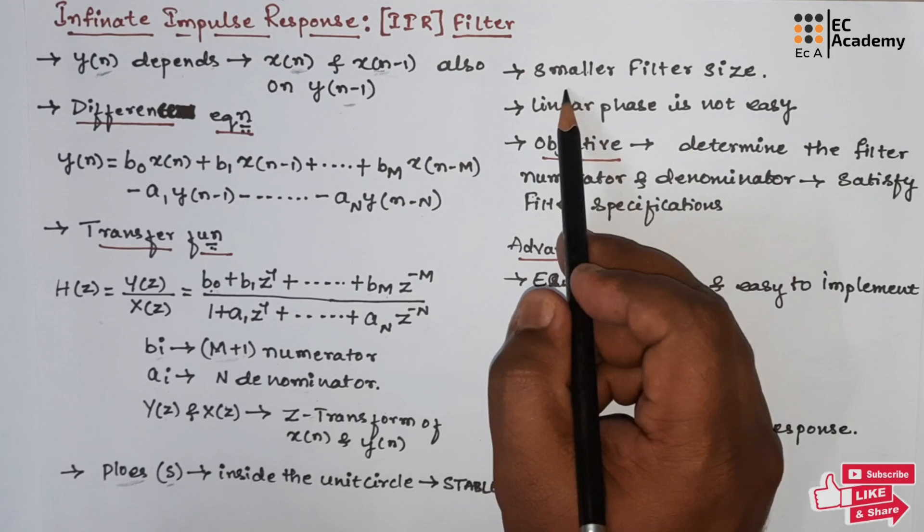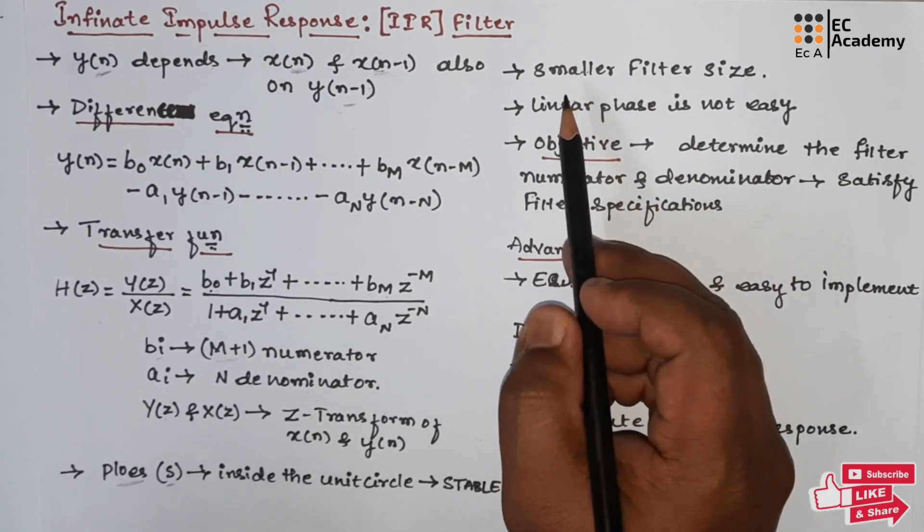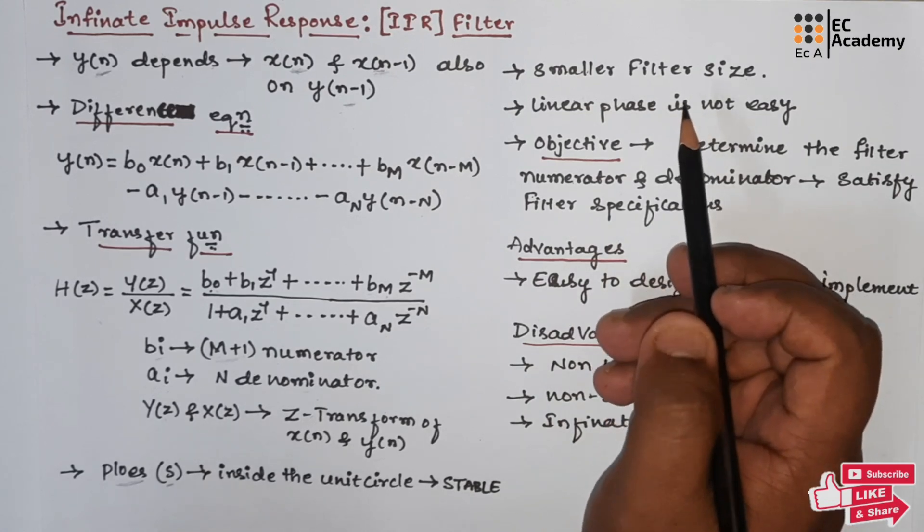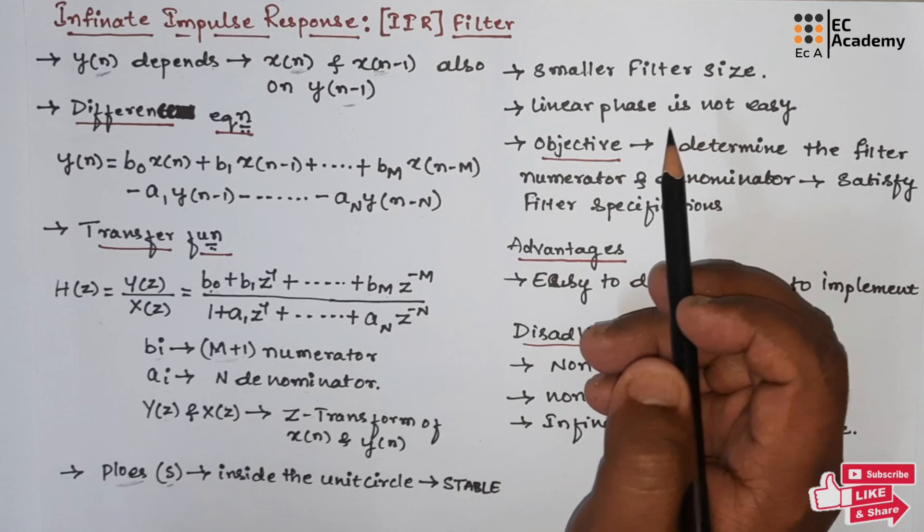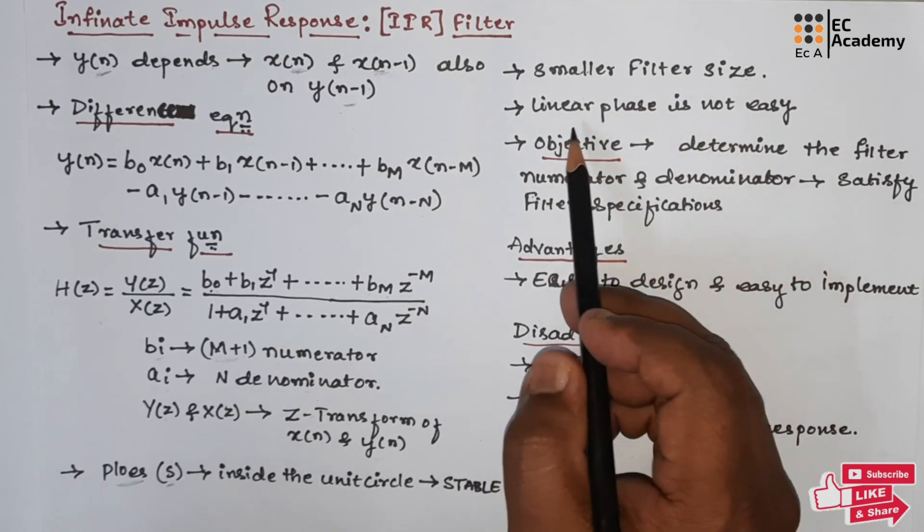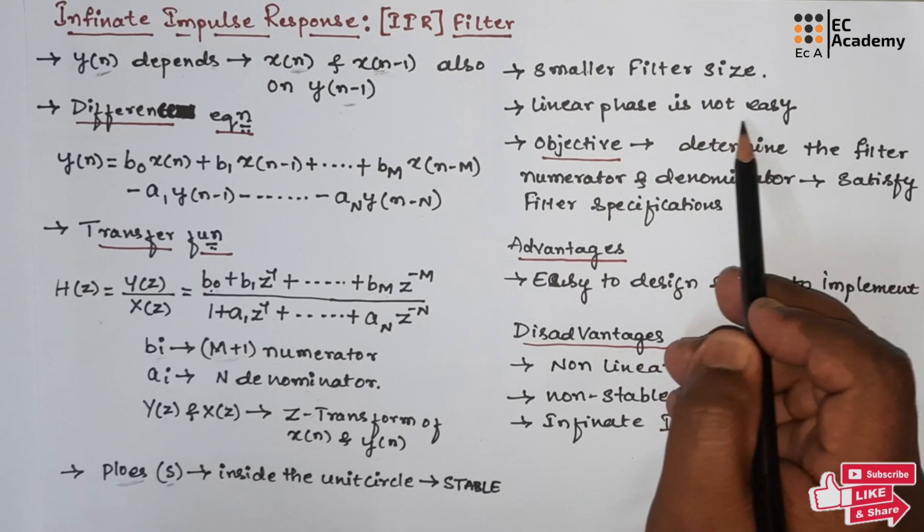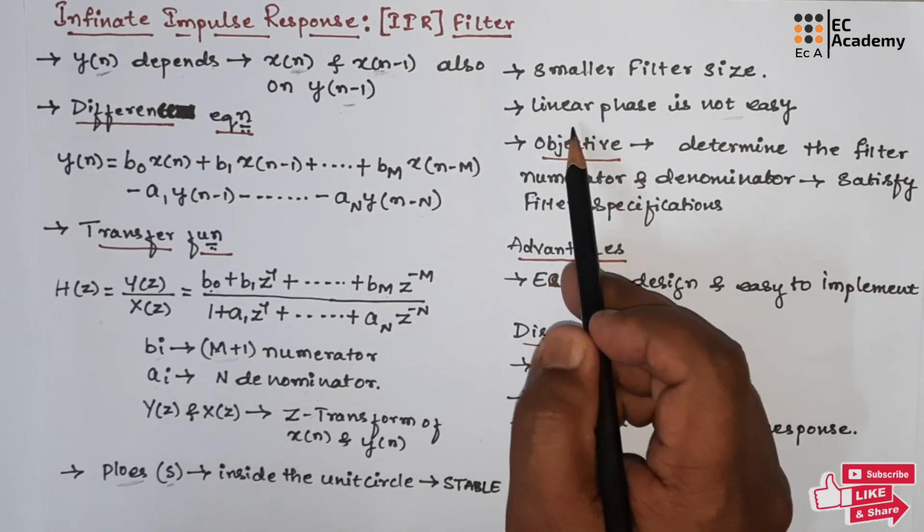If we compare IIR filter with FIR filter, the IIR filter offers a smaller filter size, hence the filter operation requires very less number of computations. But the linear phase is not easy to be obtained.